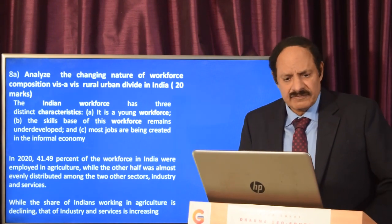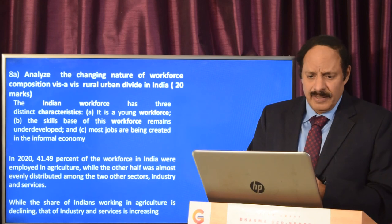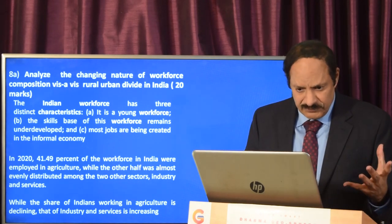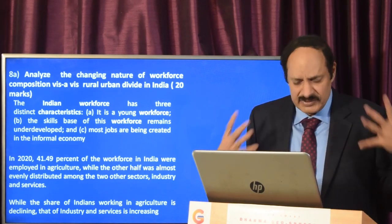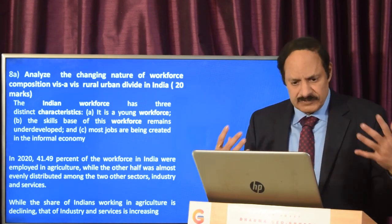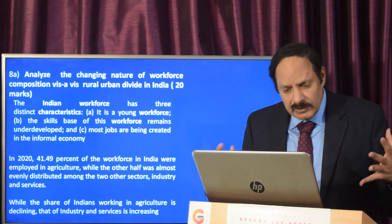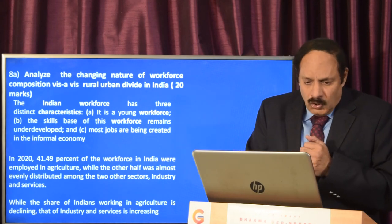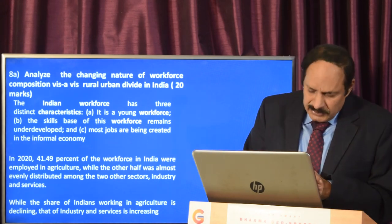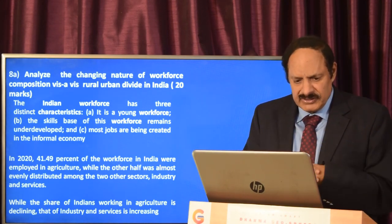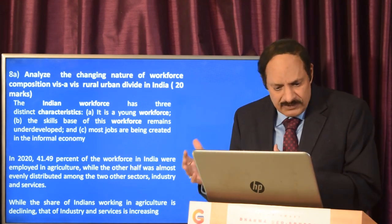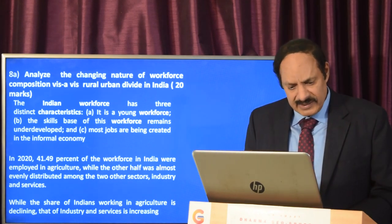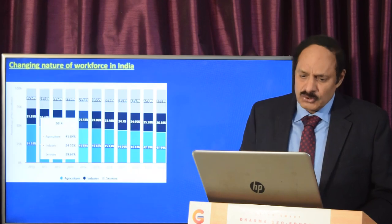Question 7 asks about analyzing the changing nature of workforce composition, specifically the rural-urban divide in India. This question should be divided into three parts: first, the characteristics of India's young workforce — nowhere in the world is there such a young workforce, though the skill base remains underdeveloped. Most jobs are being created in the informal economy. In 2020, nearly 42% of the workforce was employed in agriculture, while the rest was almost evenly distributed between industry and services. The share in agriculture is declining while industry and services are increasing.